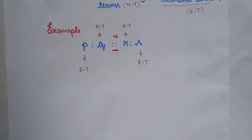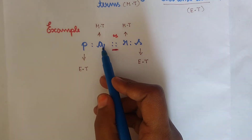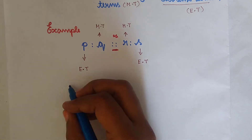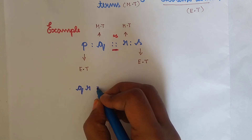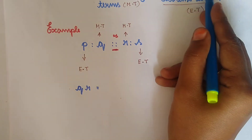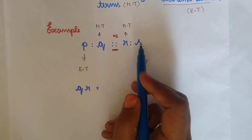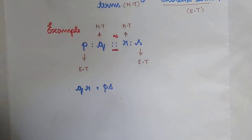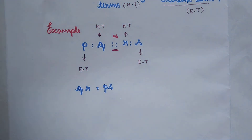The middle terms are represented by Q and R, so Q times R equals the product of the extreme terms. The extreme terms are represented by P and S. This is called proportion.